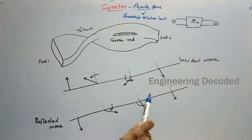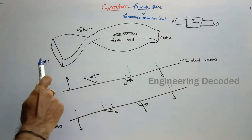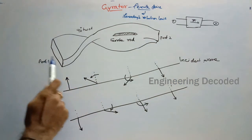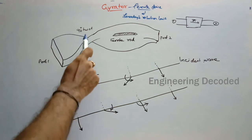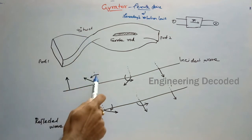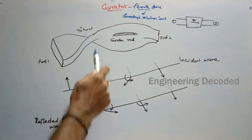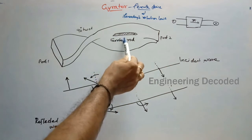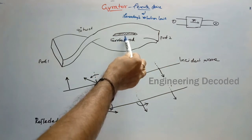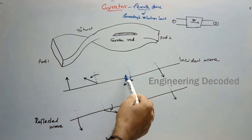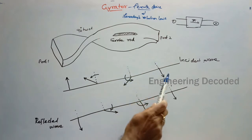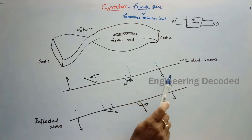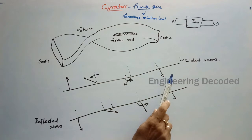The incident wave — we are giving a signal at port 1. This signal is shifted by 90 degrees by this twist, and again that 90 degree twisted signal is twisted by the ferrite rod by another 90 degrees. We get a total of 180 degree twist at the output.